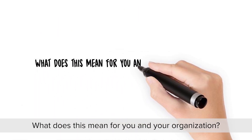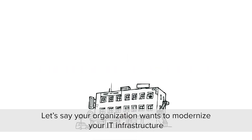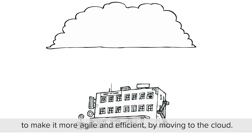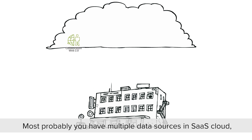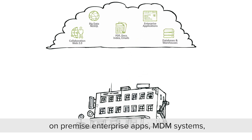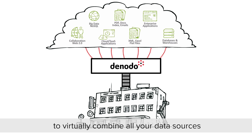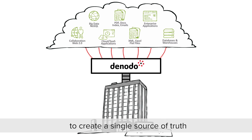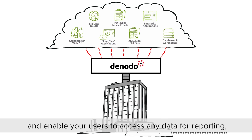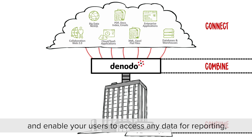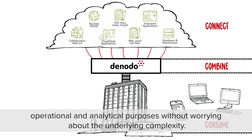What does this mean for you and your organisation? Let's say your organisation wants to modernise your IT infrastructure to make it more agile and efficient by moving to the cloud. Most probably you have multiple data sources in SaaS Cloud, big data clusters, on-premise enterprise apps, MDM systems, web and social media. Denodo Platform will work in the background to virtually combine all your data sources to create a single source of truth, and enable your users to access any data for reporting, operational and analytical purposes without worrying about the underlying complexity.